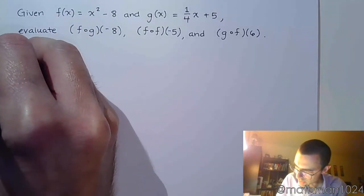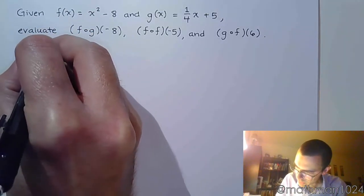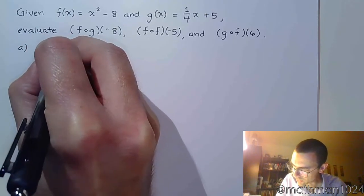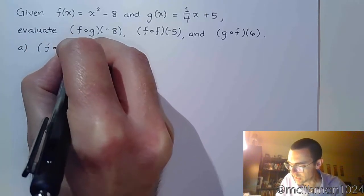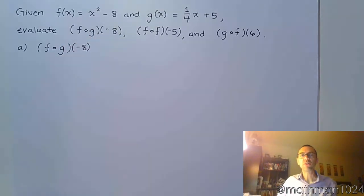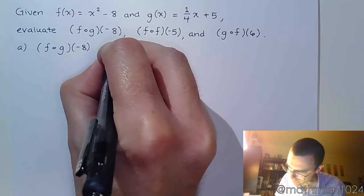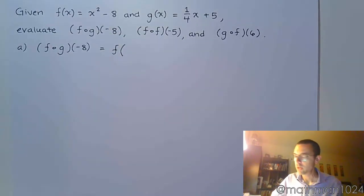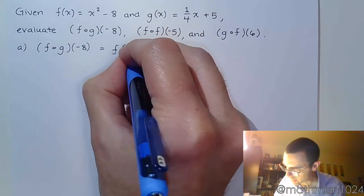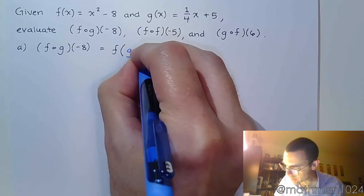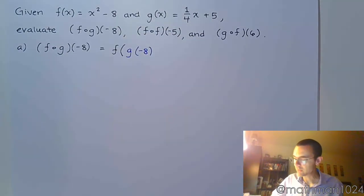So let's go ahead and start here. Let's make sure we understand the notation here. This says f of g of negative 8. This is function composition. And as we talked about in the previous video, we talked about how this means f of g of negative 8. So this is g of negative 8.